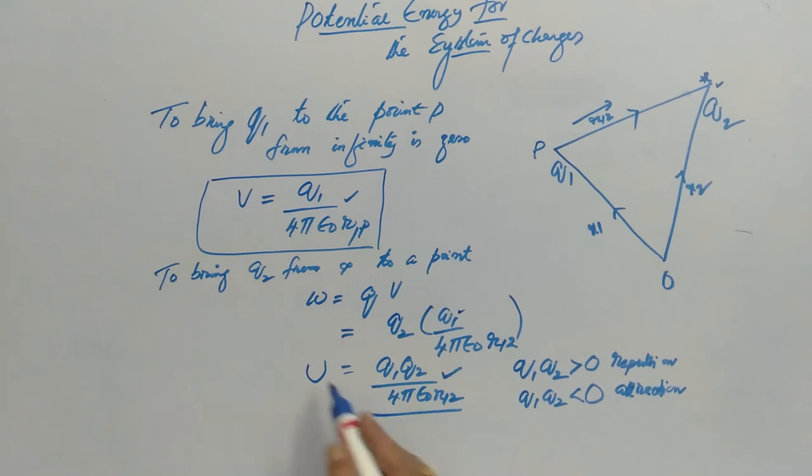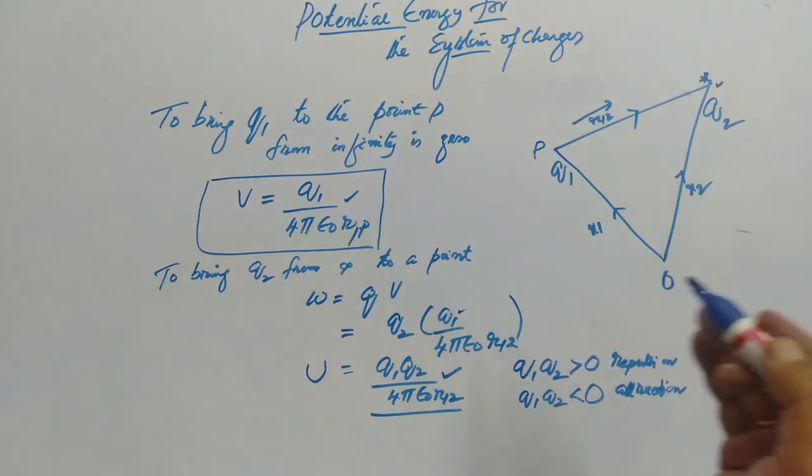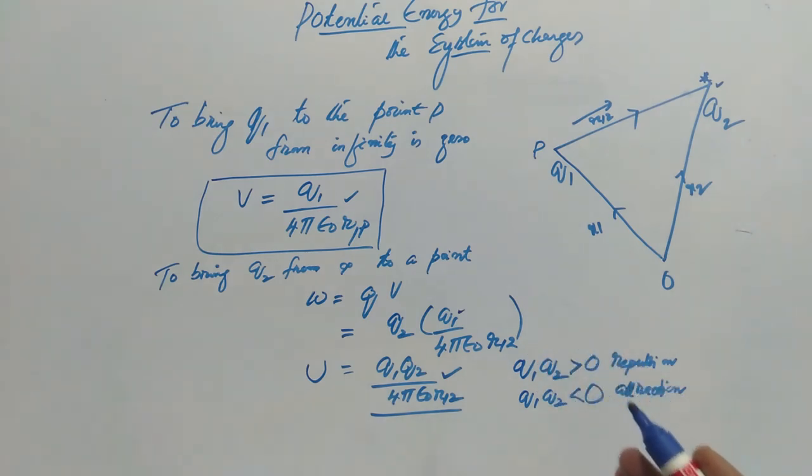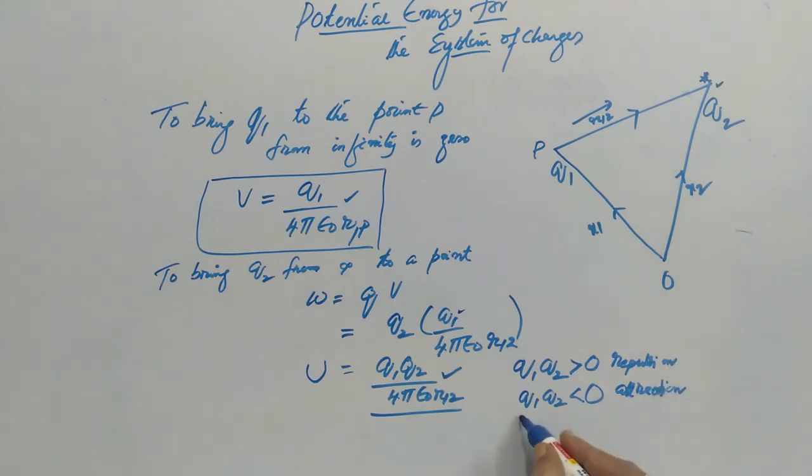That means we can understand that the assembly is already there and you wanted to bring back the Q2 to infinity and Q1 also to infinity. When Q2 is at infinity, to make Q1 to infinity we need not do any work because there is no external field existing. So Q1 Q2 is less than zero, then the potential energy is negative.